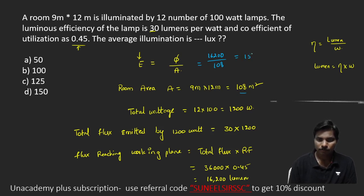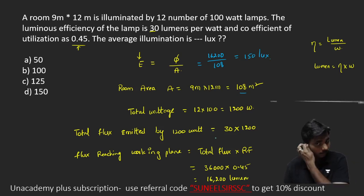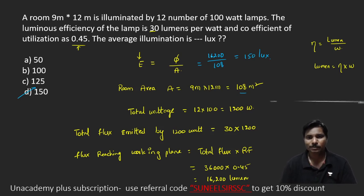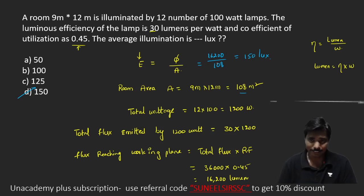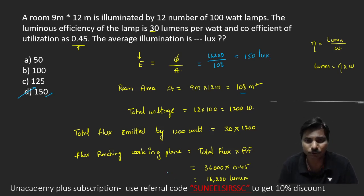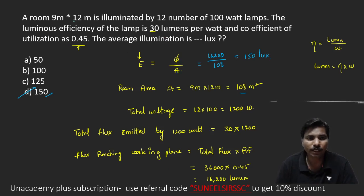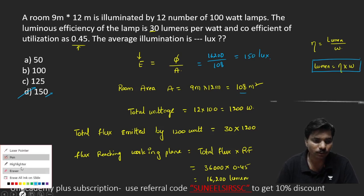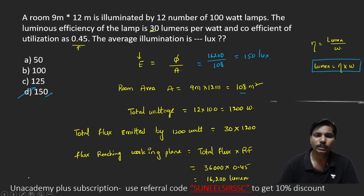This gives approximately 150 lux. So the answer is option D. Average illumination is the flux reaching the working plane divided by the area. We find the area easily and lumens = efficiency × wattage, substitute the values and get the answer.